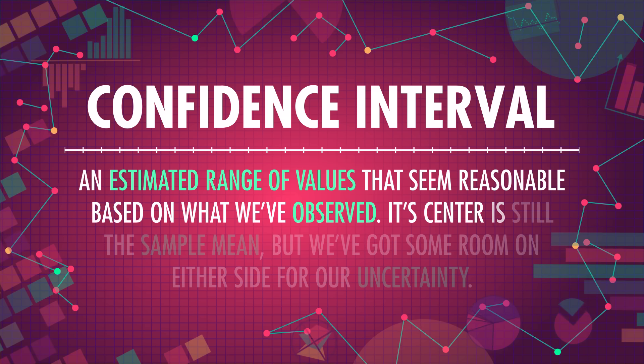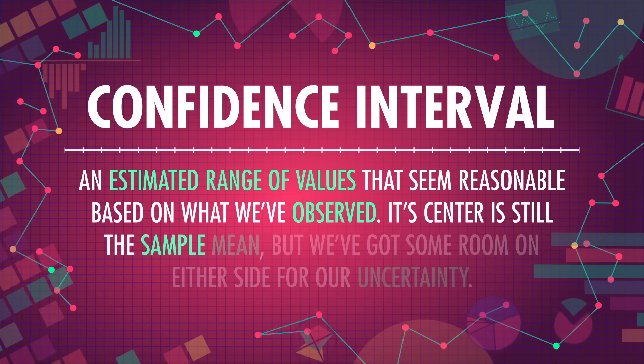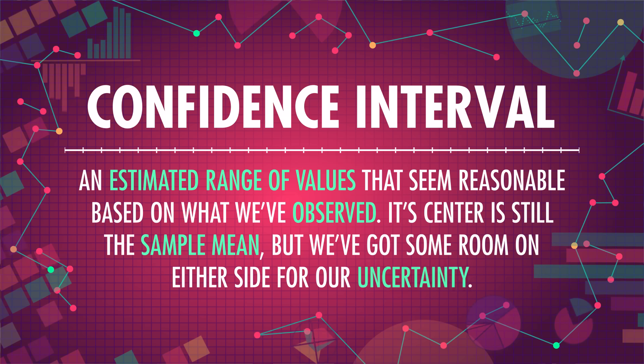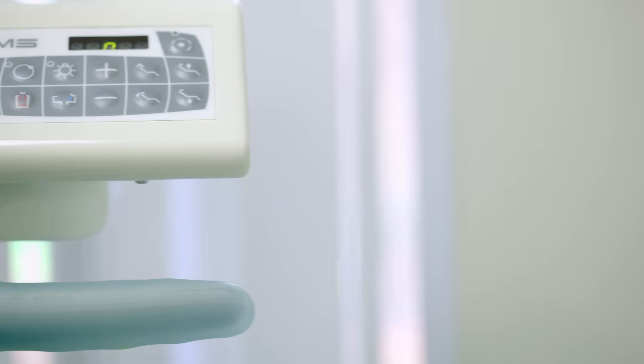Its center is still the sample mean, but we've got some room on either side for our uncertainty. So when the delivery guy says my pants are coming between 8 and 2, he's reflecting his uncertainty — the very large, frustrating uncertainty about when he'll be here.